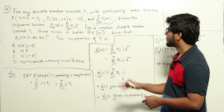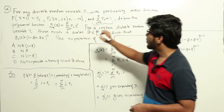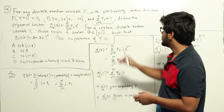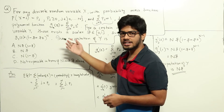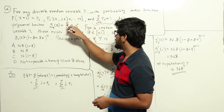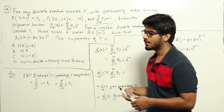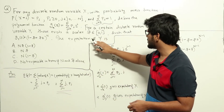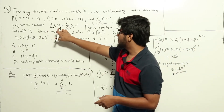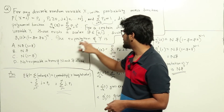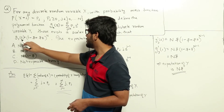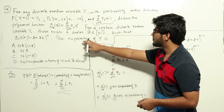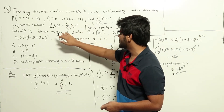On top of x, they have given us a polynomial function g_x(z) = sigma from j=0 to n of p(j) * z^j. Before finding expectation of y, let's find expectation of x in terms of this polynomial function, because for y the only data we have is the same polynomial form — g_y(z) = (1 - β + βz)^n.